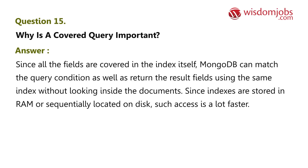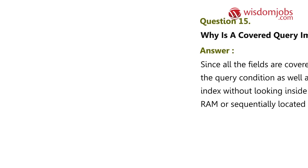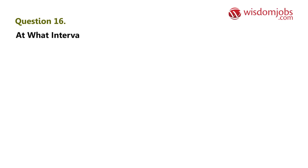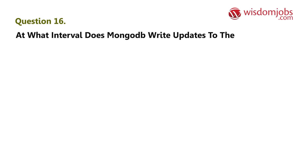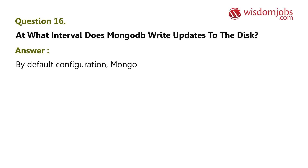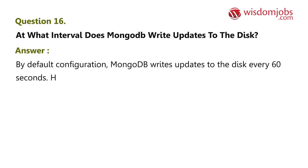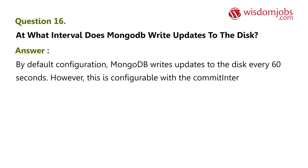Question 16: At what interval does MongoDB write updates to the disk? Answer: By default, MongoDB writes updates to the disk every 60 seconds. However, this is configurable with the commitIntervalMs and syncPeriodSecs options.